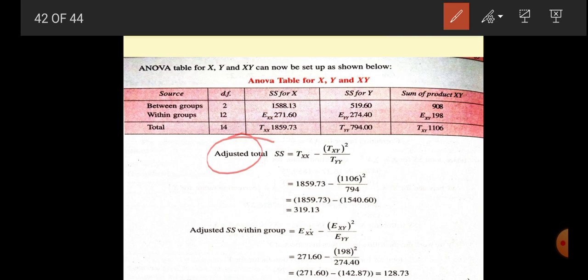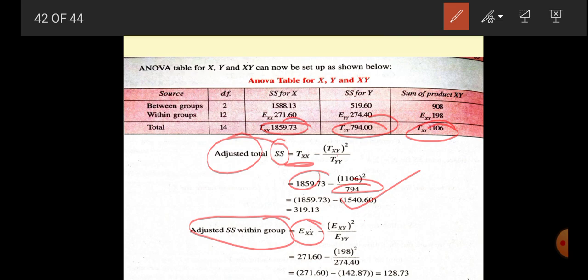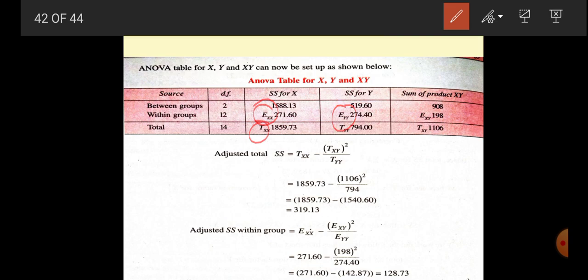What is the formula for adjusted total SS? It equals TXX minus TXY squared by TYY. TXX is 1859.73, TXY is 11606, and TYY is 794. If you calculate adjusted SS for total, it's this. Adjusted SS within group formula is EXX minus EXY squared by EYY. If you put all these values, you will get 128.73.